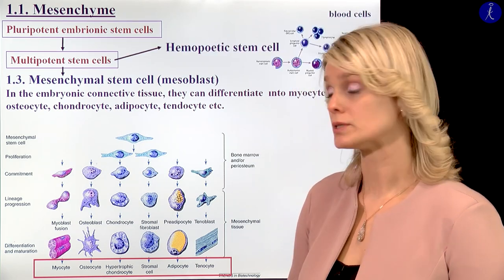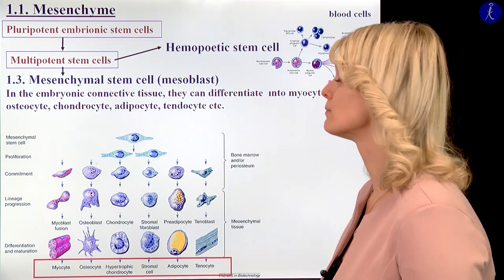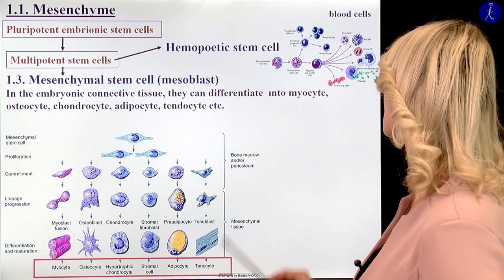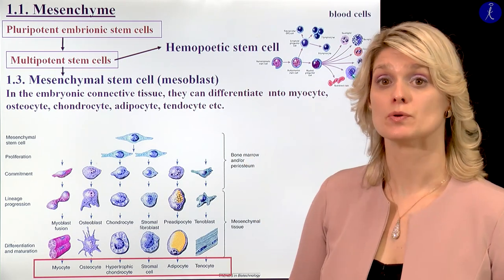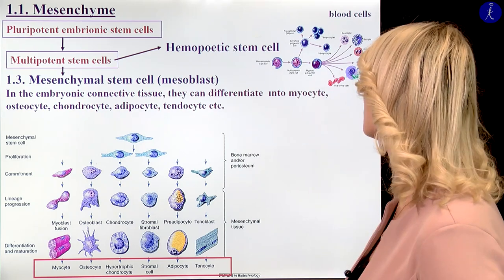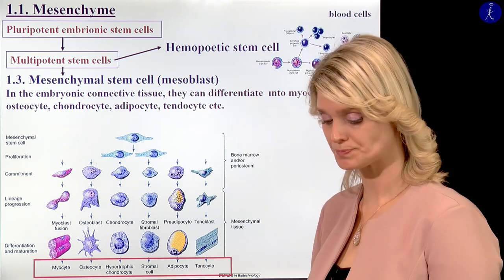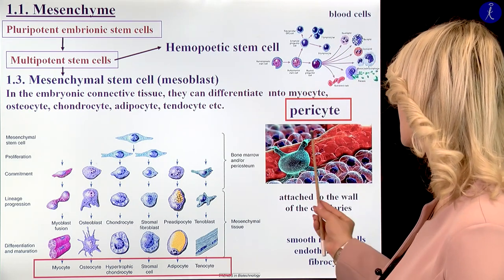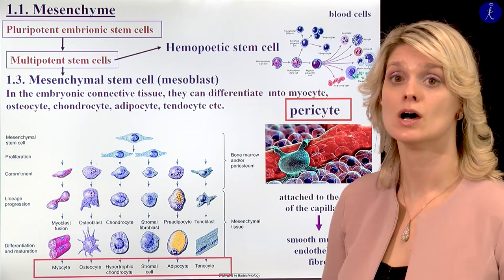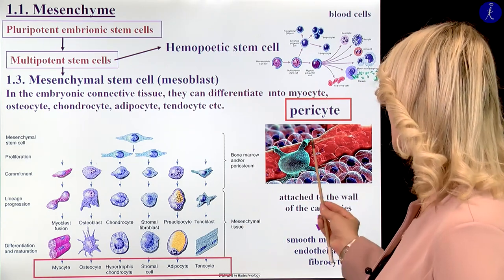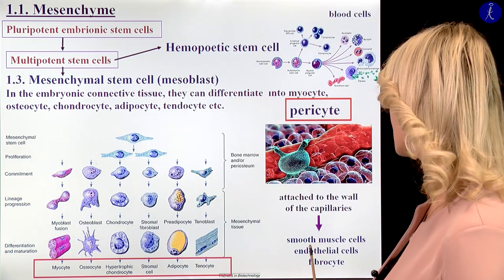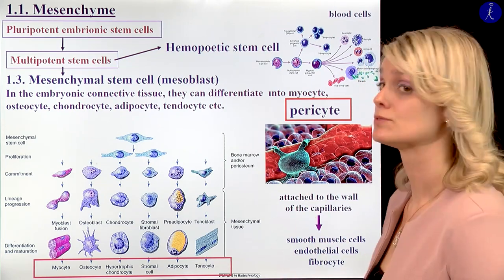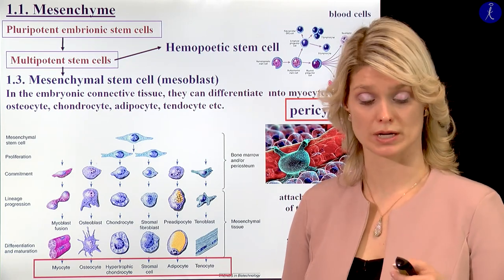And of course we can talk about another stem cell, the hematopoietic stem cell. From this can develop the different white blood cells, the red blood cells, the platelets. We also have a separated lecture about blood formation. I would also like to mention the pericytes — those are cells located on the wall of vessels, and they are able to differentiate into smooth muscle cells, endothelial cells, or fibrocytes. It is a really interesting cell type.